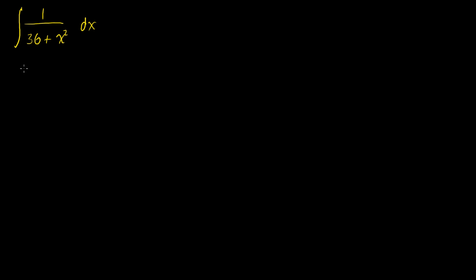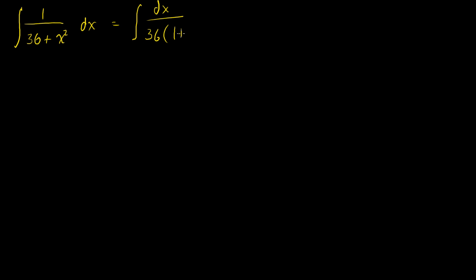Let's see what trig identity we can get here. I always like it in terms of 1 plus something squared. So I'm going to rewrite my integral — this is equal to the integral of dx over 36 times 1 plus x squared over 36.